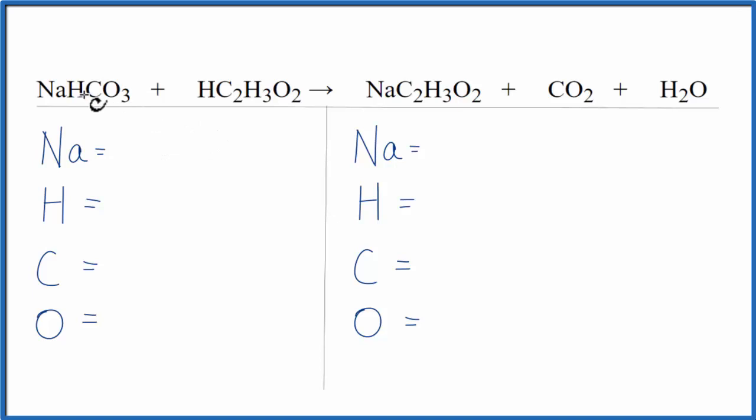So let's count the atoms up on each side of the equation. We have one sodium, we have one hydrogen, we have one more here, and then we have these three. So we have five hydrogen atoms.